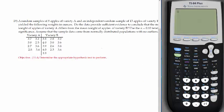Okay, number 19. A random sample of eight apples of variety A and an independent random sample of 13 apples of variety B yielded the following weights in ounces. Do the data provide sufficient evidence to conclude that the mean weight of apples of variety A differs from the mean weight of apples of variety B? Use alpha equals 10 percent level of significance. Assume that the sample data come from normally distributed populations with no outliers.